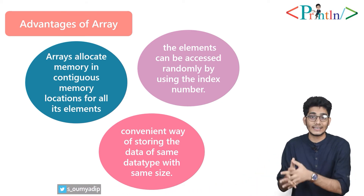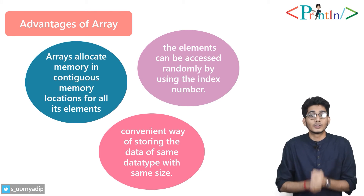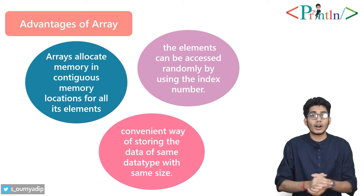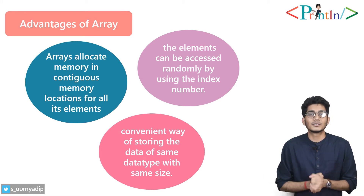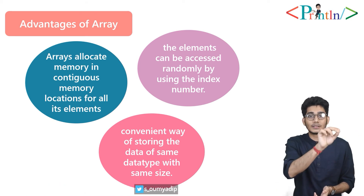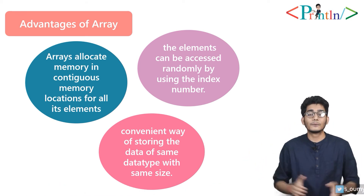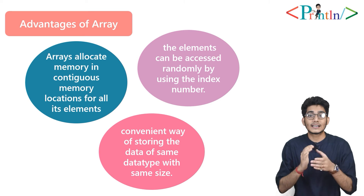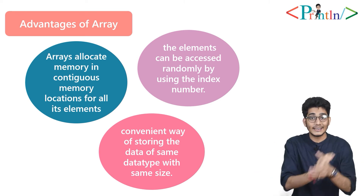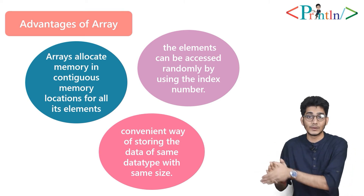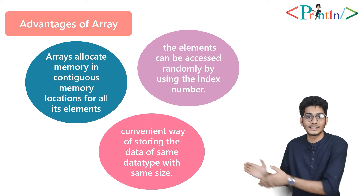Whether we're talking about 2-byte or 4-byte types, the memory allocation will be sequential — so addresses would be 1000, 1004, 1008, 1012, and so on. This is contiguous memory allocation. For linked lists it's different — we'll talk about non-contiguous memory allocation in the linked list portion.